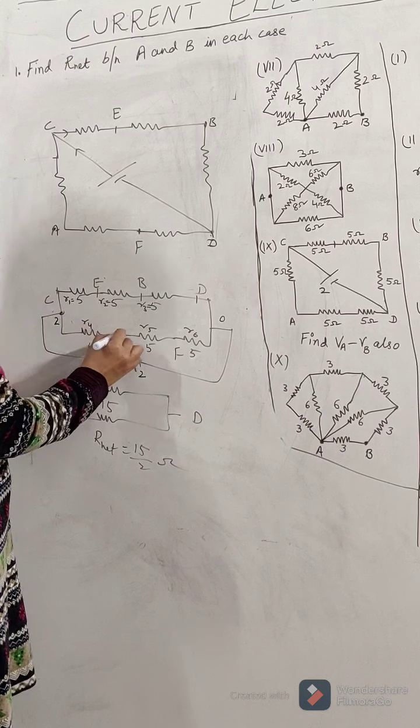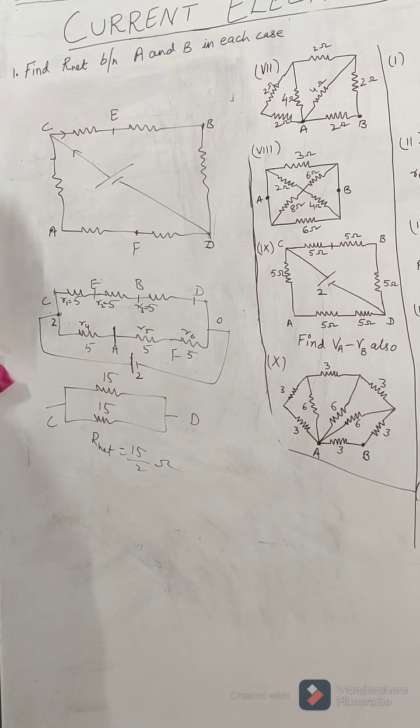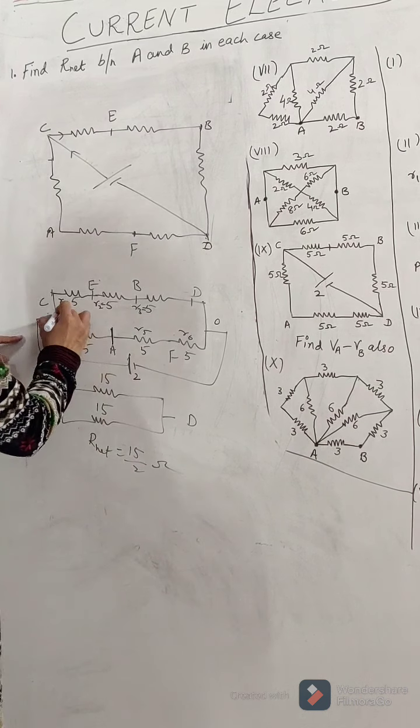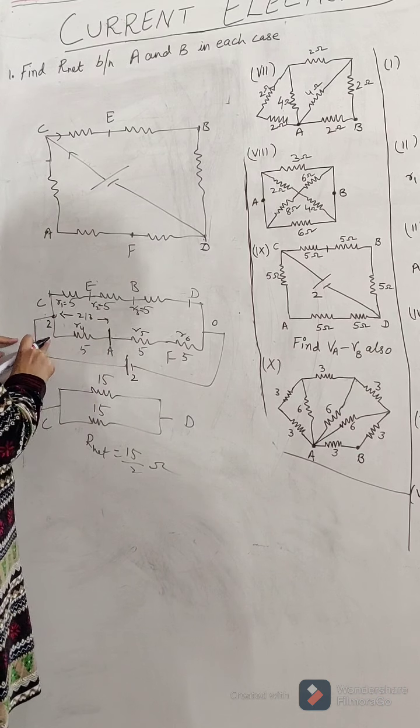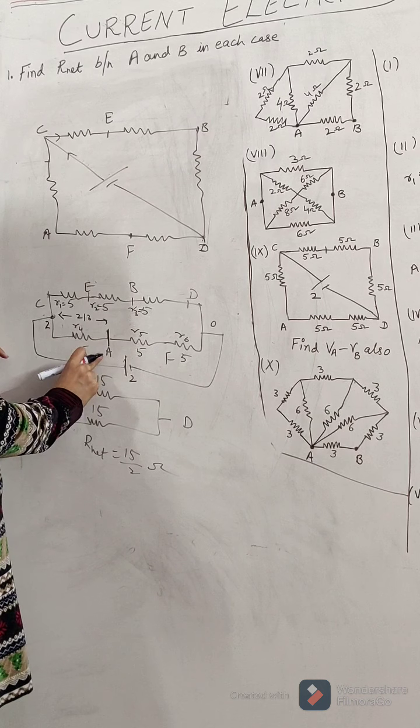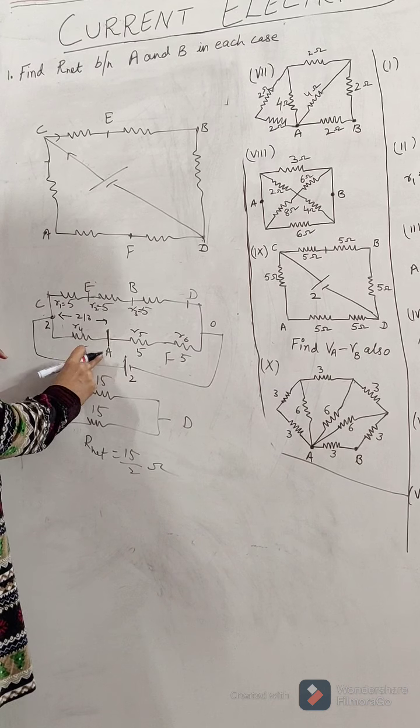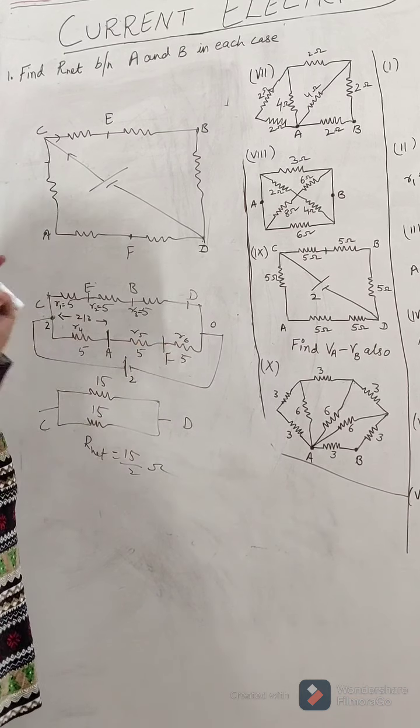So if this is 2 and the drop across it is 2 by 3, then we can find the potential of point A. We know how to find the potential. If across this the drop is 2 by 3, and this is higher voltage 2, then the higher voltage will be at which point? It will be 2 minus 2 by 3. So this was at 4 by 3, this was also at 4 by 3, and this was also at 4 by 3.